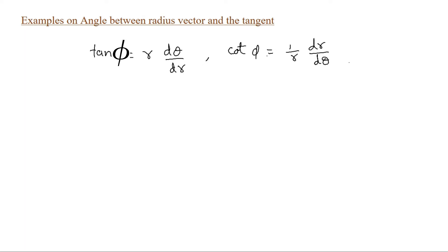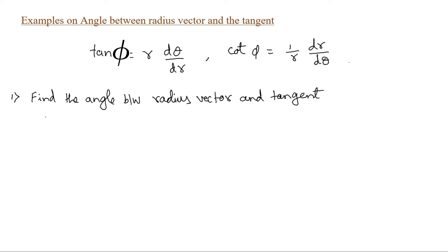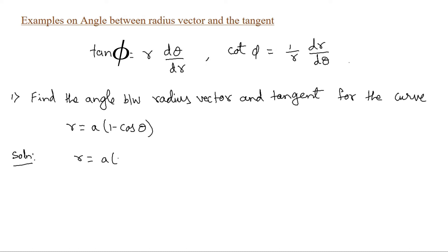Let me use this formula and try to solve a few problems. The first example: find the angle between the radius vector and tangent for the curve r = a(1 - cos θ). What I will try to do is express this in the form of (1/r)(dr/dθ) and replace that using the cot φ formula.